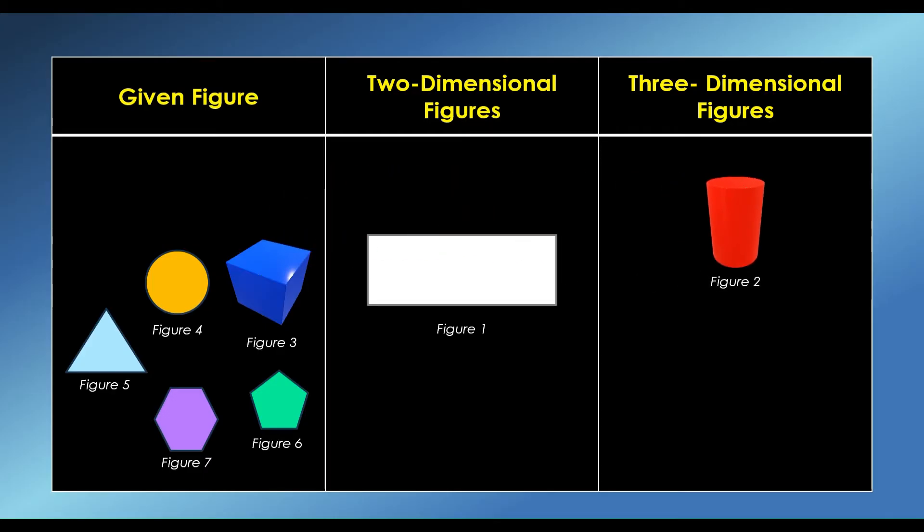We have figure 2, a cylinder. A cylinder is a three-dimensional solid geometrical figure that has two parallel circular bases connected by a curved surface.